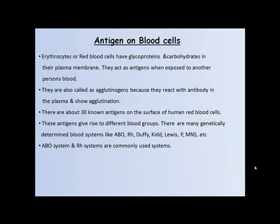Antigens present on blood cells. Erythrocytes or RBCs have glycoproteins and carbohydrates in their plasma membrane. They act as antigens when exposed to another person's blood. They are also called agglutinogens because they react with antibodies in the plasma and show agglutination. There are about 30 known antigens on the surface of human RBCs, and these antigens give rise to different blood groups.